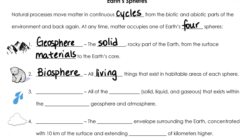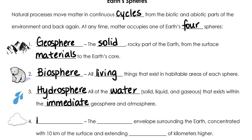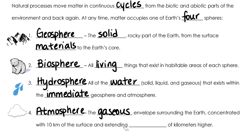The hydrosphere encompasses all the water on the planet. This includes water in solid, liquid, and gaseous form that exists within the immediate geosphere and atmosphere. Which brings us to the atmosphere — this is the gaseous envelope that surrounds our planet. There are many layers to the atmosphere, the most concentrated layer of which is the first 10 kilometers above Earth's surface. But technically, the atmosphere extends hundreds of kilometers above Earth's surface.